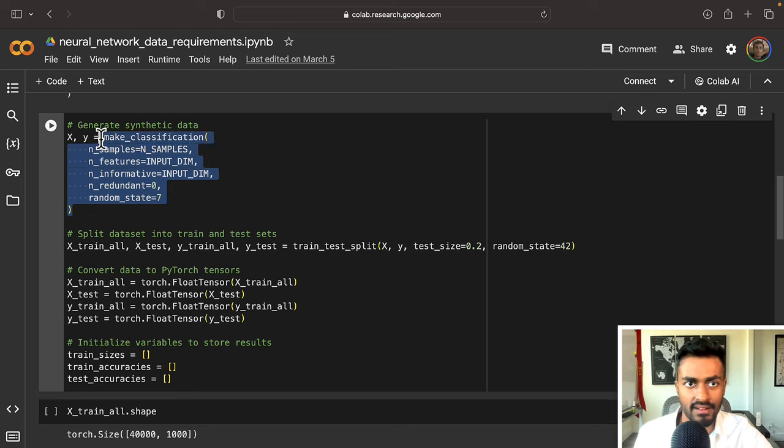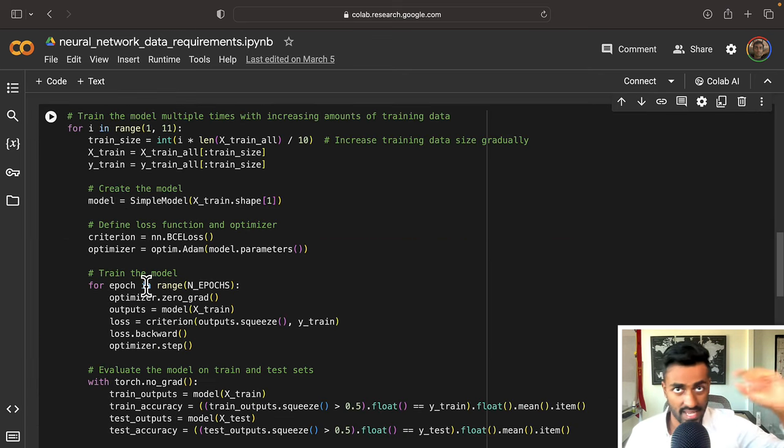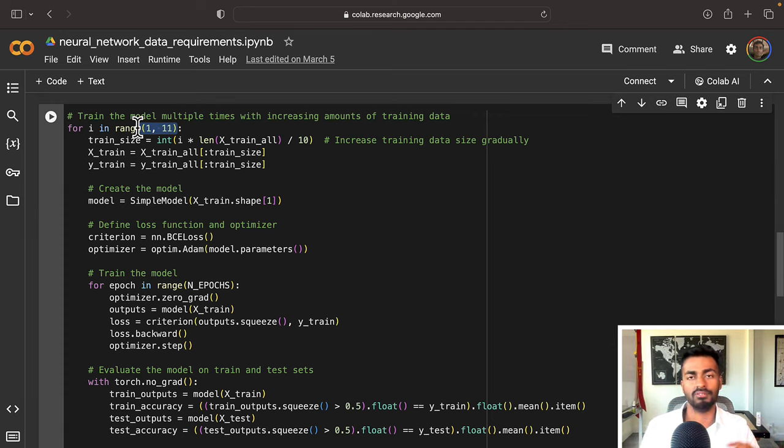We then generate this dataset where we have 50,000 samples. Each sample is 1,000 dimensions and all of those 1,000 dimensions are informative. We're then going to split it into a test train set. So that would be 40,000 in the training set and 10,000 in the test set. Now we're going to train on the same model about 10 times over here. And each time we're going to only take like some fraction of this data. So for example, of the 40,000 examples in the first iteration, we're just going to take 10% of that data. So it'll be like 4,000 training examples.